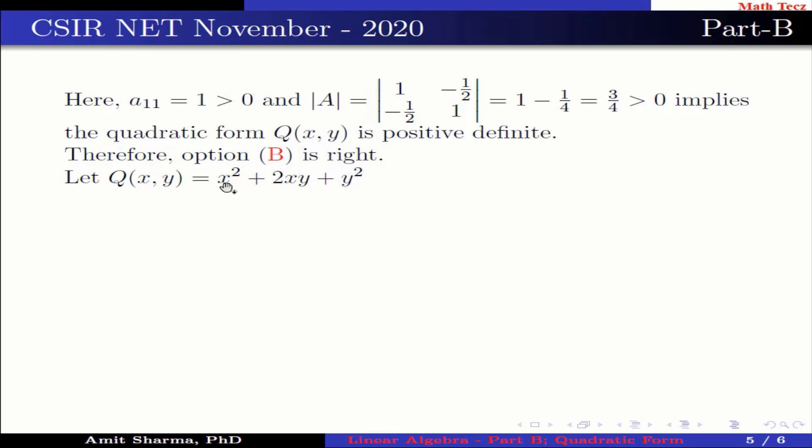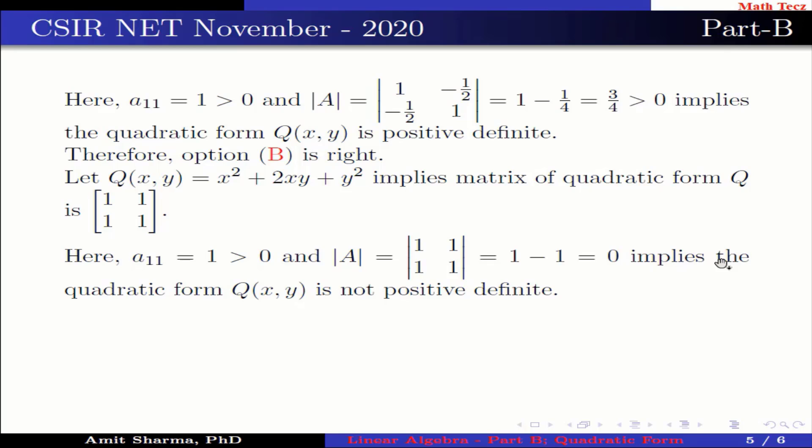Let Q(x,y) = x² + 2xy + y². This implies the matrix of quadratic form Q is a 2×2 matrix having elements 1, 1, 1, 1. Here, a₁₁ = 1, which is greater than 0, and the determinant of A is 0, which implies the quadratic form Q(x,y) is not positive definite. Therefore, option C is wrong.